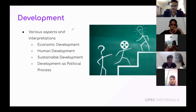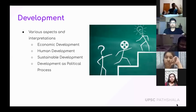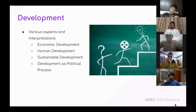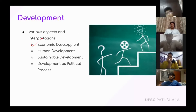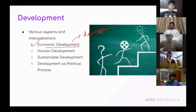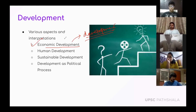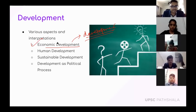The first concept is economic development — a simple idea we have discussed many times in economics. For humanities and sociology students, half the course is about defining development: whose development should be prioritized, how development should reach people. When we say development has happened, we usually mean economic development — GDP growing from six percent to eight percent in the early 2000s, meaning the size of the economy was growing.